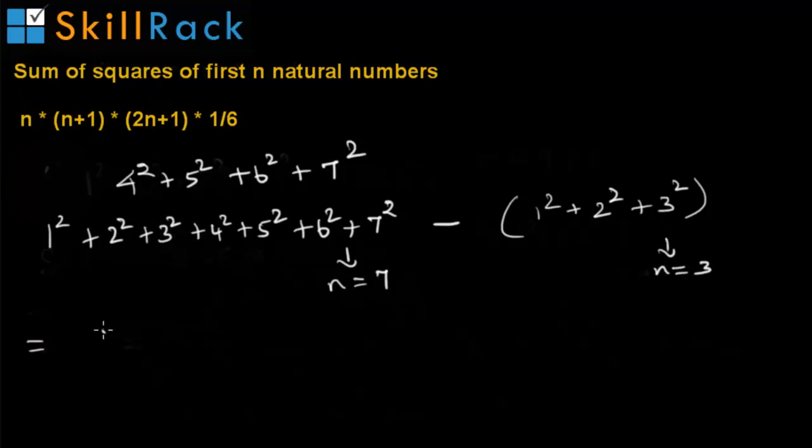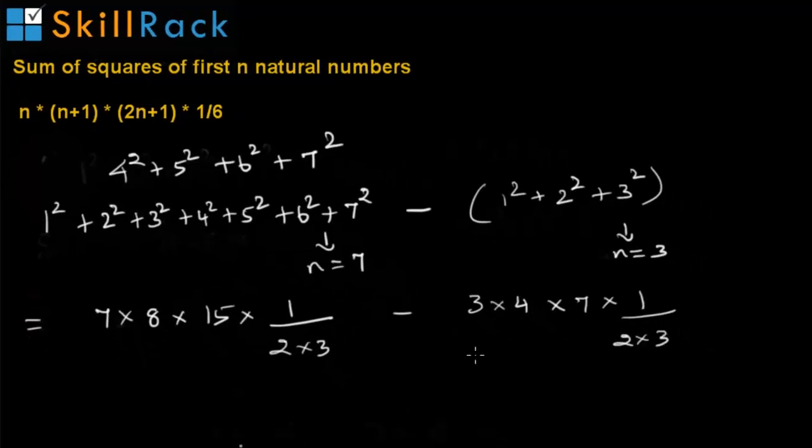Now applying the formula we can write the entire expression as 7 into 8 into 15 into 1 by 6. 6 can be written as 2 into 3 minus here n is equal to 3. So it is 3 into 4 into 7 into 1 by 6 which is 2 into 3.